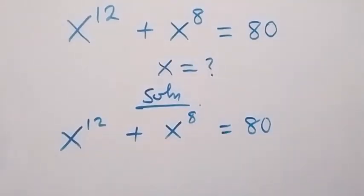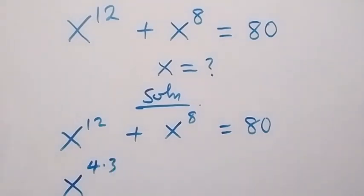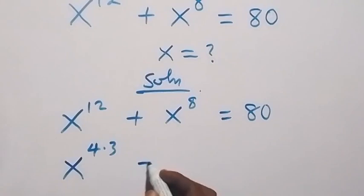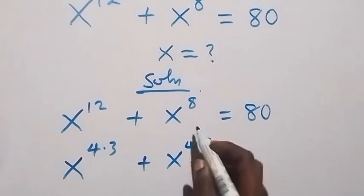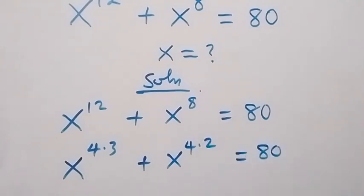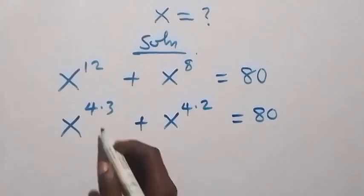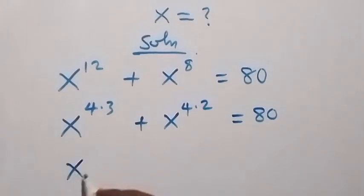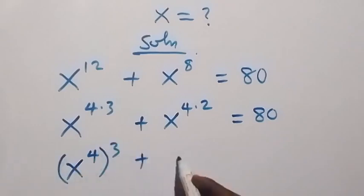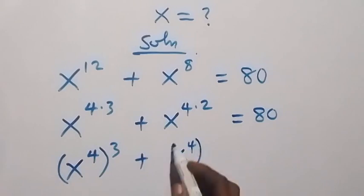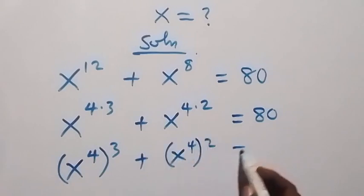From here, we can factor x raised to power 4 out here, and this can give us x raised to power 4 times 3 — that's the 12 there. Then plus here we have x raised to power 4 times 2 — that's the 8 — which equals to 80. From the law of exponents, this becomes x raised to power 4, then raised to power 3, plus x raised to power 4, then raised to power 2, equals to 80.